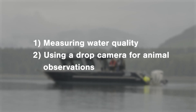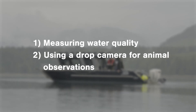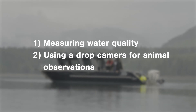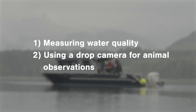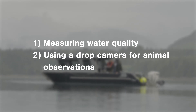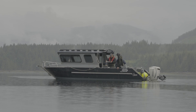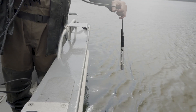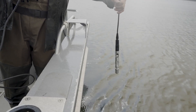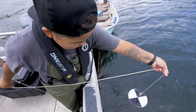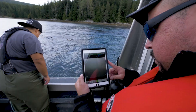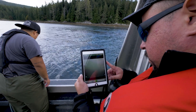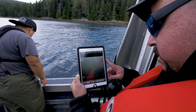In this video, we'll cover how to measure water quality using a CTD and a Secchi disc, as well as using a drop camera to make animal observations. If you have a water quality measuring device, a drop camera, and a Secchi disc, you can collect additional information to increase the information collected during your survey.